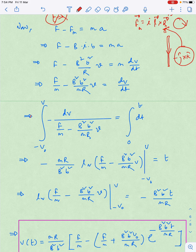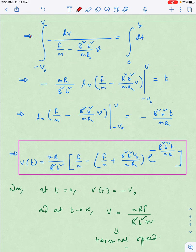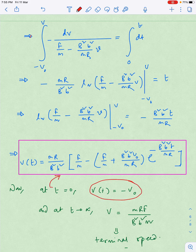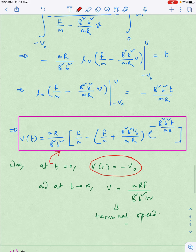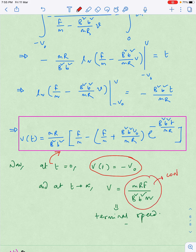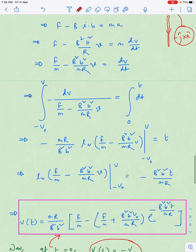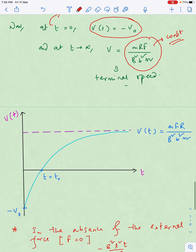If you do that, you will get the result as this one. I will check whether I have done right or wrong. I'll simply put t equals 0 in this equation and you can see that v(t) is coming to be minus v₀, so it is correct. If I put t tends to infinity, you are getting v equals mRF by B² L². This entire quantity is constant, there is not a single variable, so that means the rod will achieve a terminal speed.